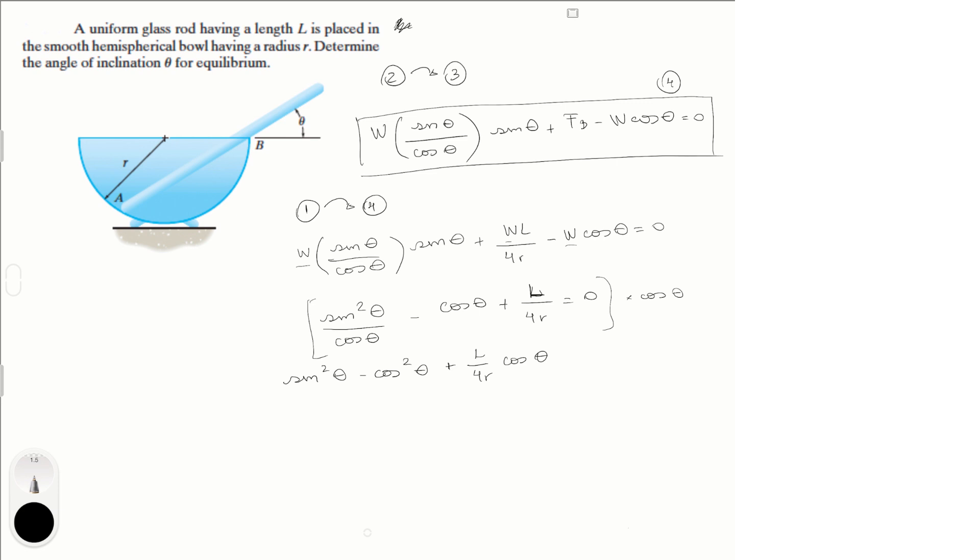And we get sine squared theta minus cosine squared theta plus L over 4R cosine of theta is equal to 0.